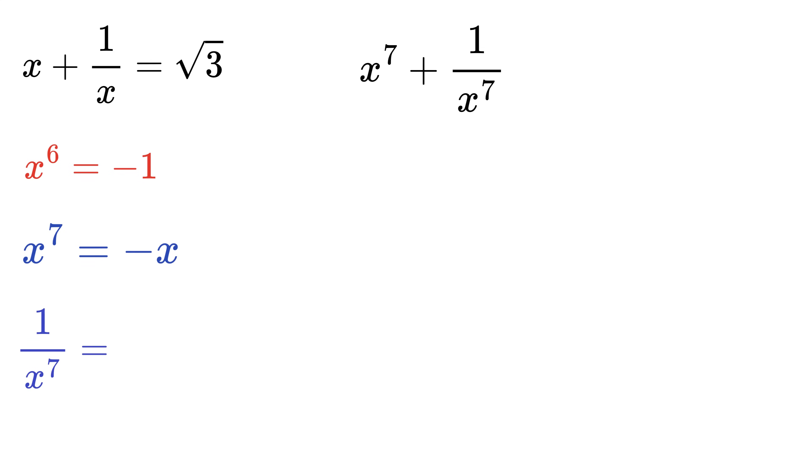Also, 1/x⁷ will therefore equal -1/x. Now add both of them: x⁷ + 1/x⁷ = -x - 1/x, which will be equal to -(x + 1/x). But hey, look here - this thing is equal to √3.